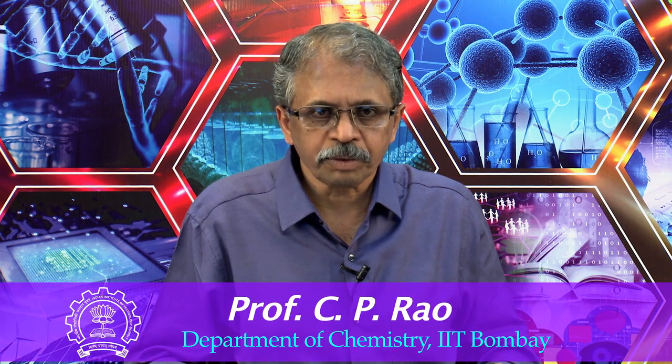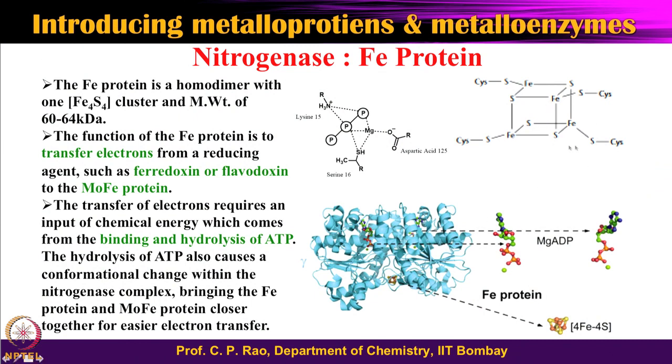Welcome to the next class on Inorganic Chemistry of Life: Principles and Perspectives. In the immediately previous class we were looking at the nitrogenase molybdenum-containing enzymes. Nitrogenase has two major components: one is called the iron protein and the other is the molybdenum iron protein. The iron protein contains an iron-sulfur cluster and a molybdenum ATP as well as molybdenum ADP bound system — these are the essential components.